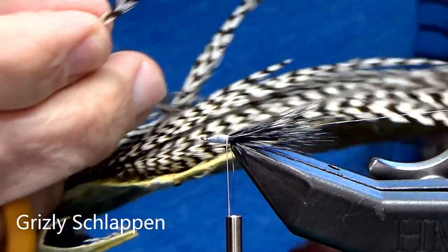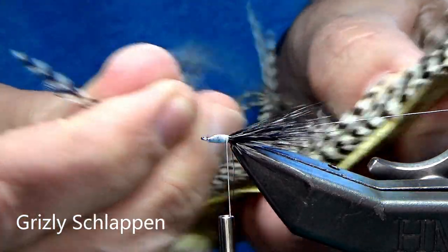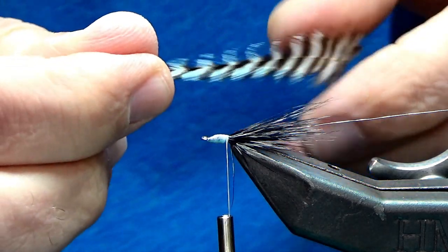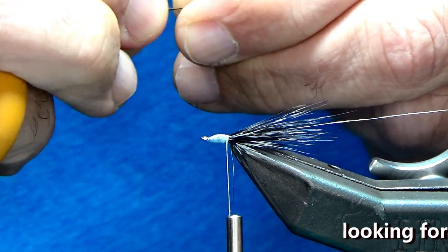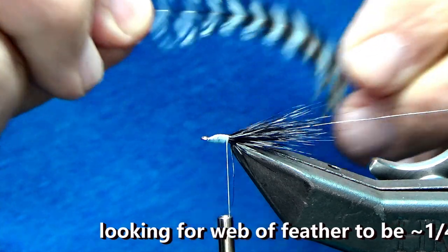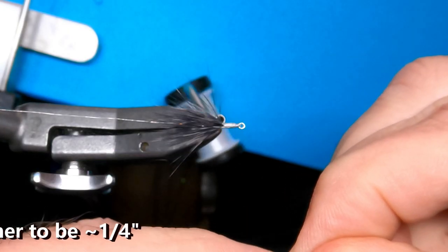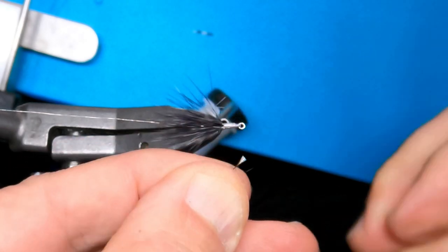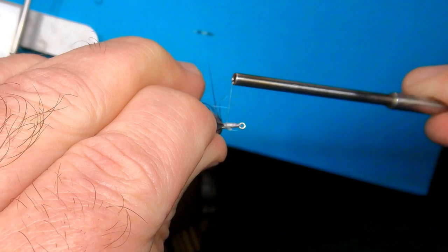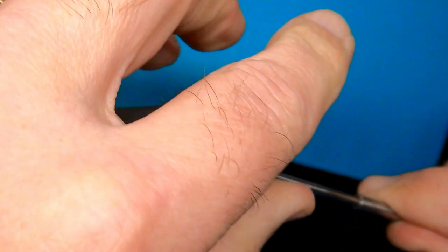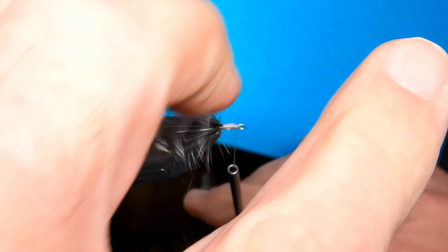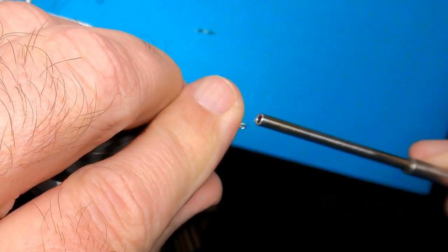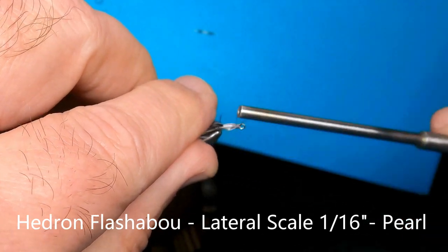As I mentioned, I'm going to use grizzly schlappen. This is just a neck that I got at a show. Dirt cheap, like five bucks in a bin. It doesn't have to be a fancy piece of schlappen. And next, I'm just looking for the feathers to be about a quarter of an inch in length. I'm going to preen them so they're back out of the way and just come in and clip. A little bit of a triangle makes it easy to tie in. It looks good. I've got that random feather hanging out out front. It's not going to hurt anything, but I'll just pull it back and get it out of the way.